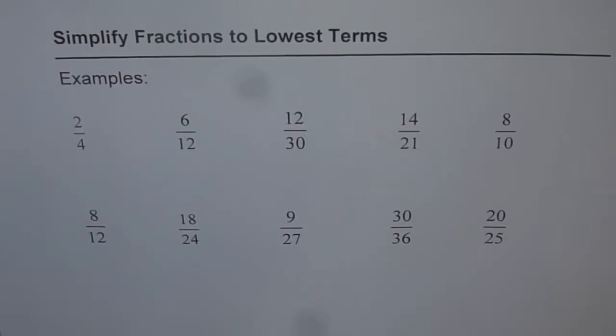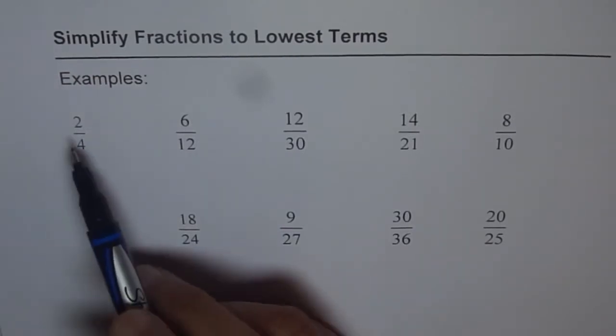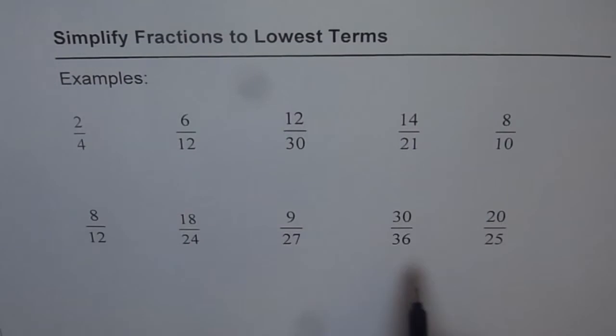Now let us learn how to simplify fractions to lowest terms. Lowest terms means that you can't simplify them any further. Let's start with the very first one which is 2 over 4. Here I have 10 of them. Once you get the technique, I will appreciate that you can pause the video, solve or simplify these fractions and then check your answer. Now let me do all of them one by one for you.